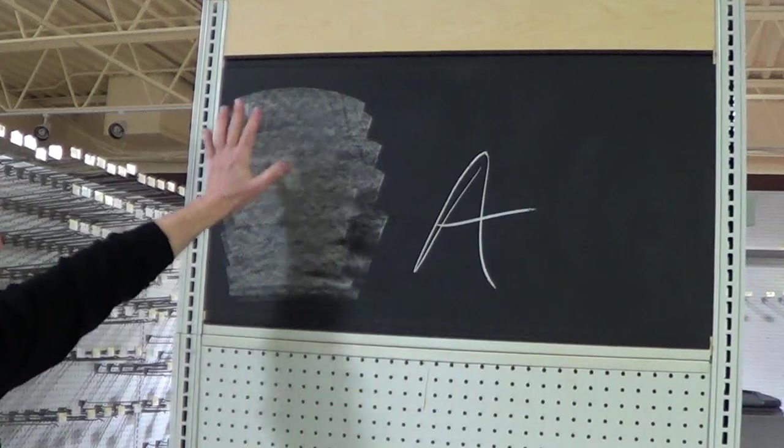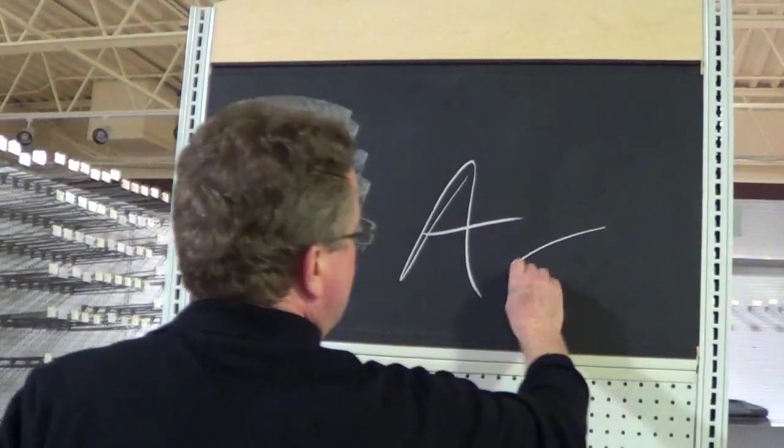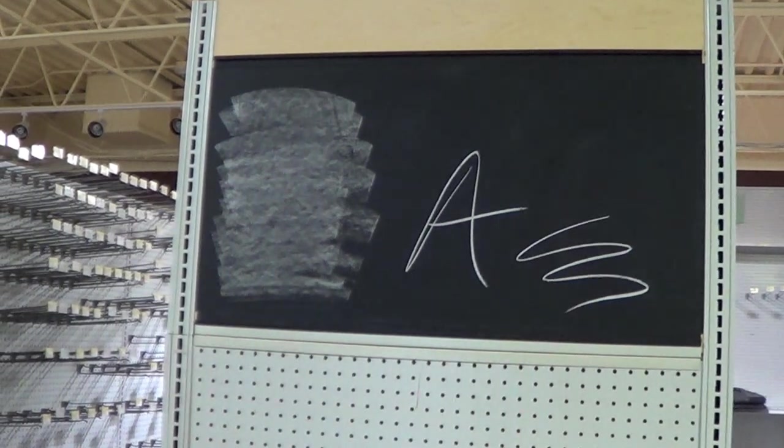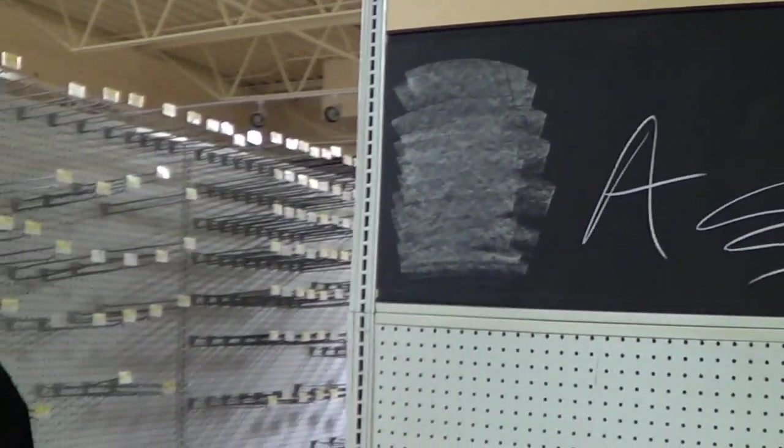Then you'll take a damp cloth, wipe this off, and you can take any piece of wood or metal and turn it into a chalkboard. Just a really nice idea for businesses or for a kid's room.